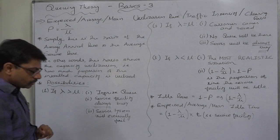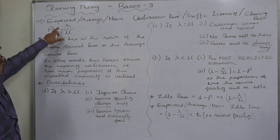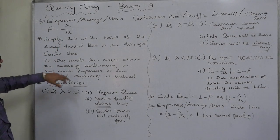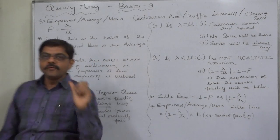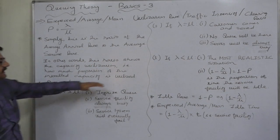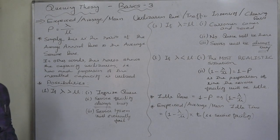In other words, we can also say that the ratio of lambda to mu shows the capacity utilization. That means how much proportion of the installed capacity is actually utilized under the given situation.